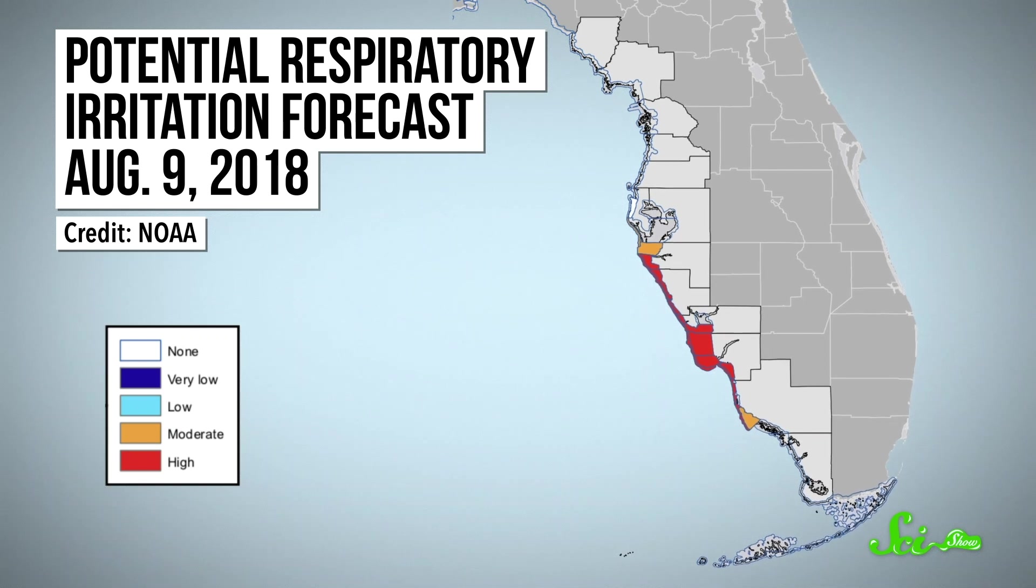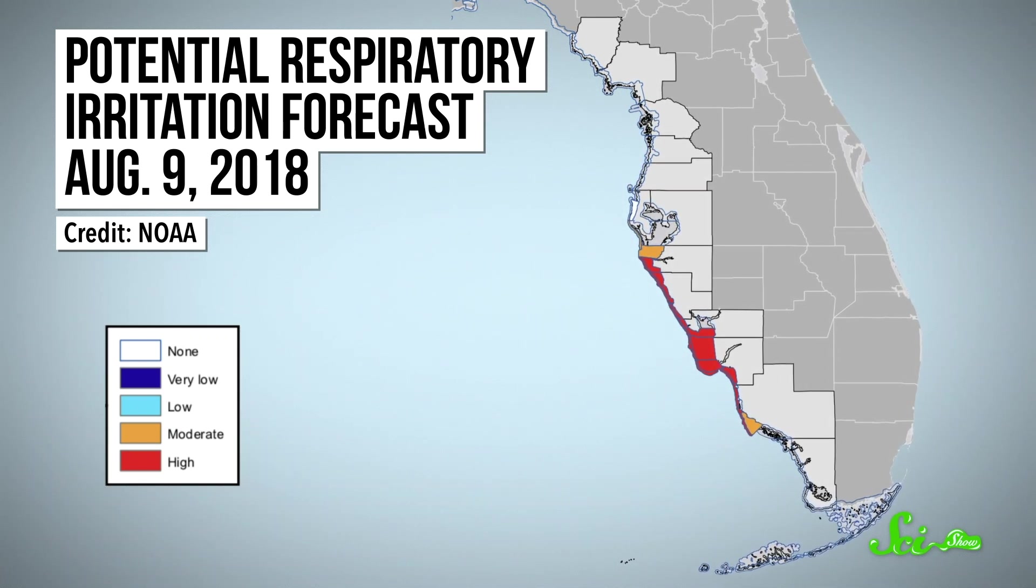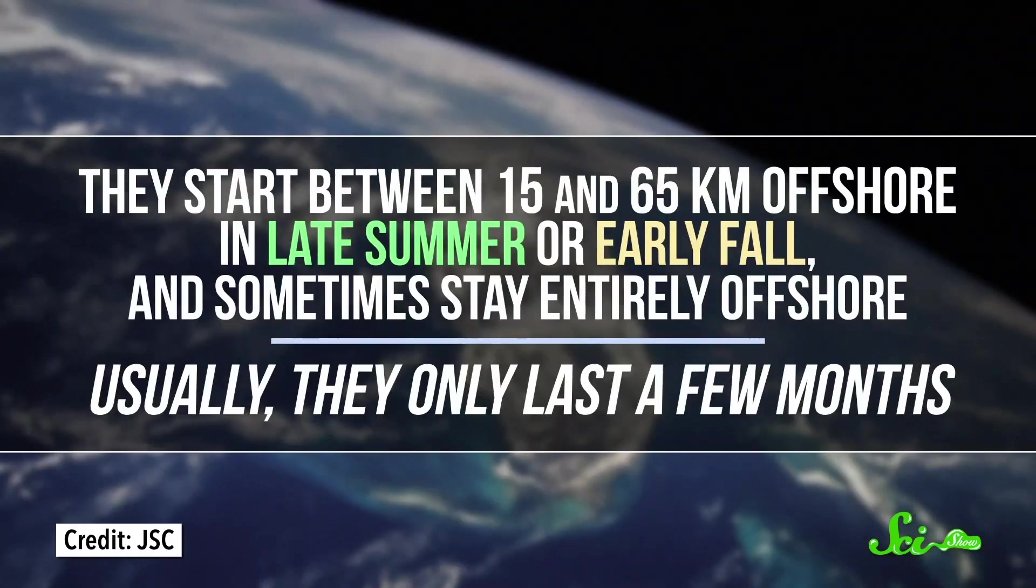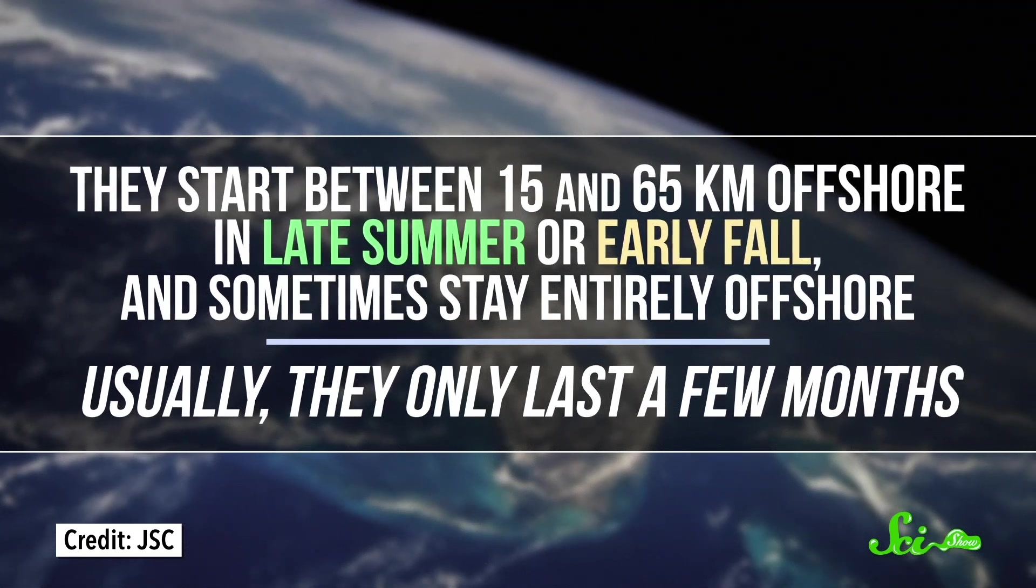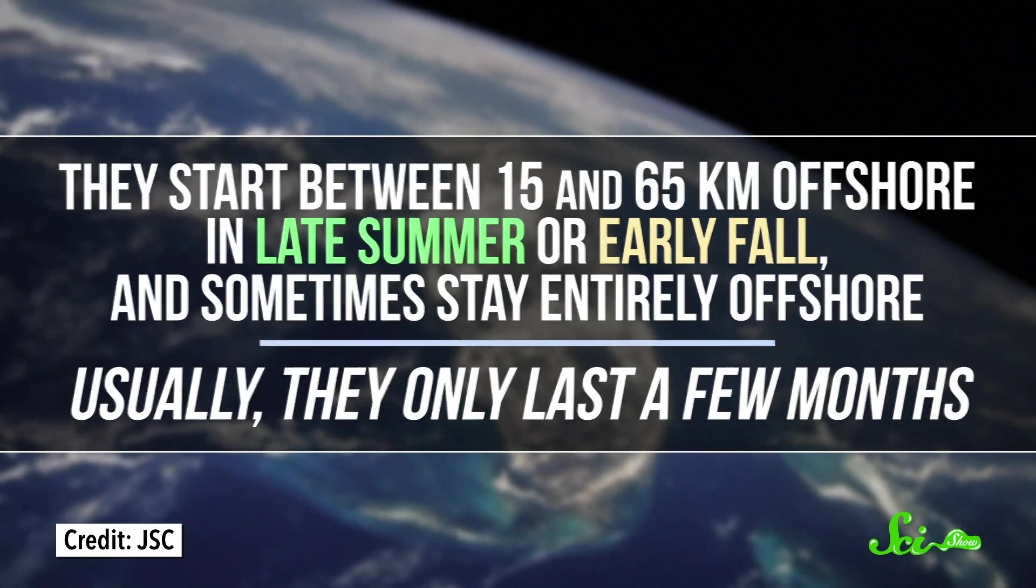This year's red tide is an especially awful one, with more than 160 kilometers of southwest Florida coastline already affected. And scientists are still trying to understand why it's so bad. Red tides occur just about every year now, and there are records of them dating back centuries. So it's not like these things are new. They start between 15 and 65 kilometers offshore in late summer or early fall, and sometimes stay entirely offshore. Usually, they only last a few months.